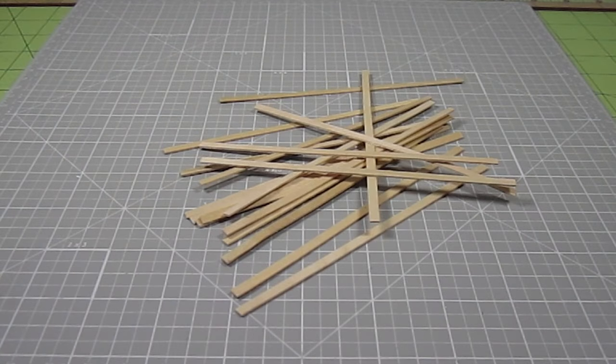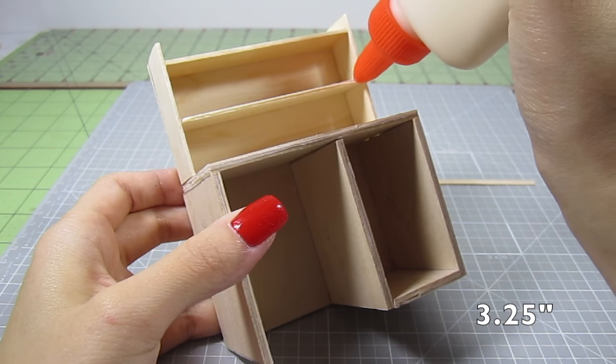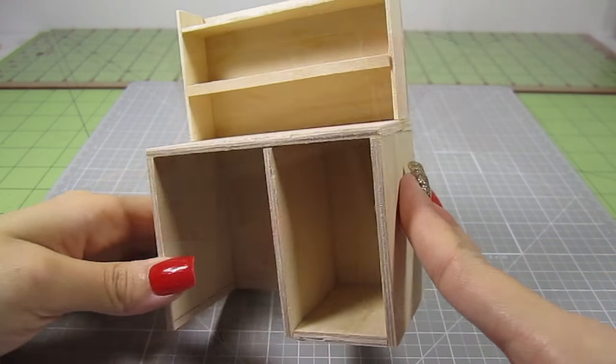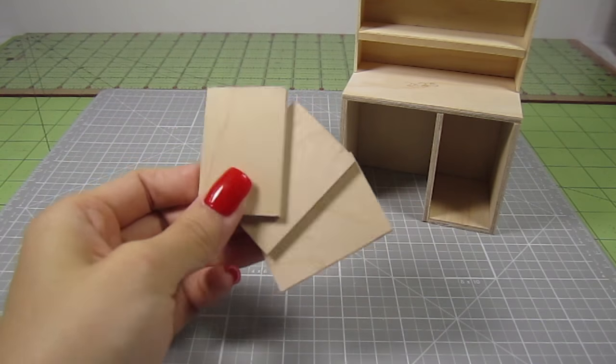Once that's dry, grab some wooden coffee stirrers. You actually only need one. Cut out a 3 1⁄4 inch section and glue it to the front of the bottom shelf. This creates a ledge. It's just a nice detail. Let's build the drawers next.